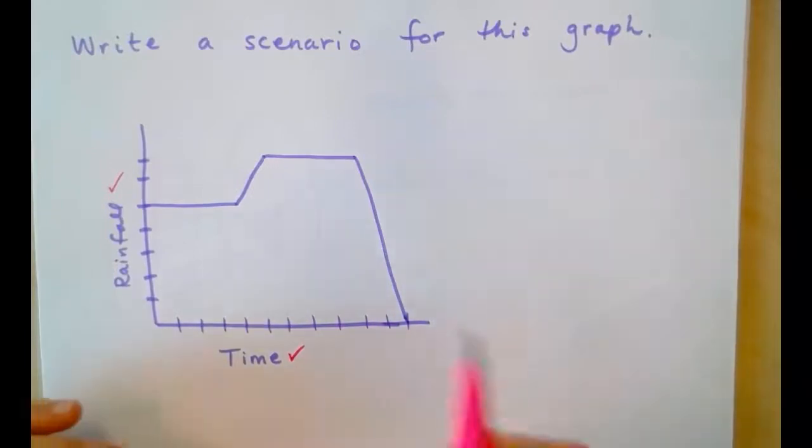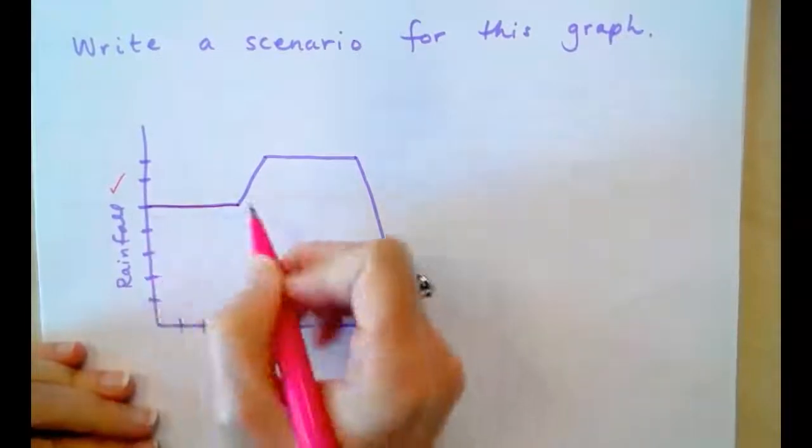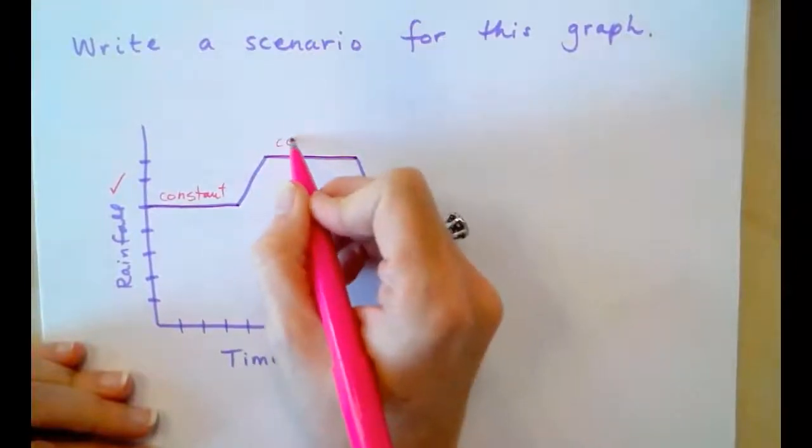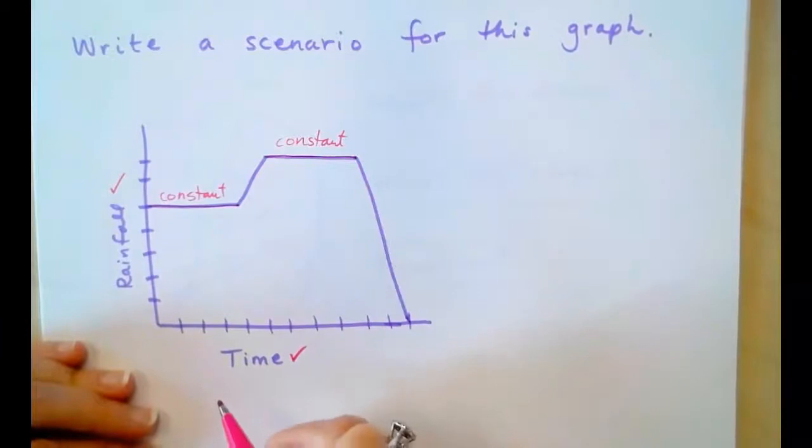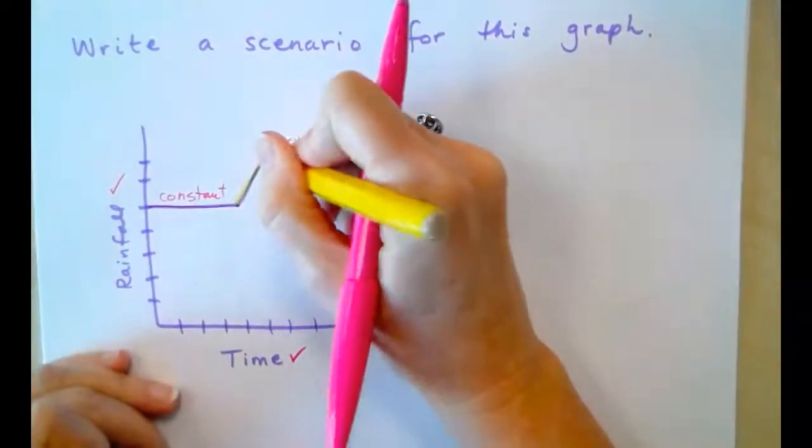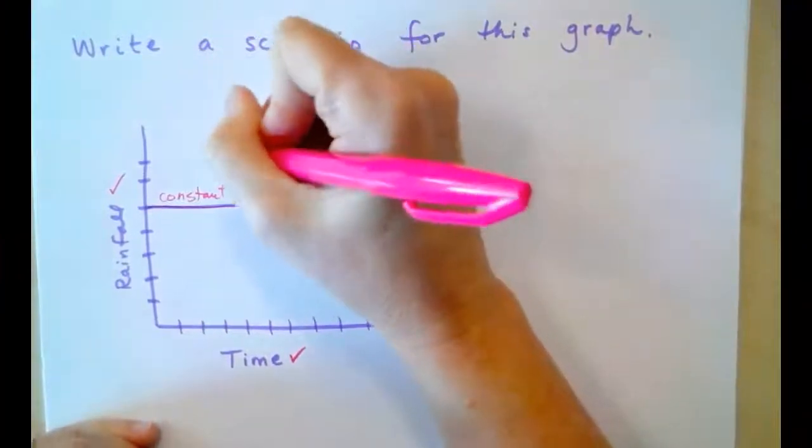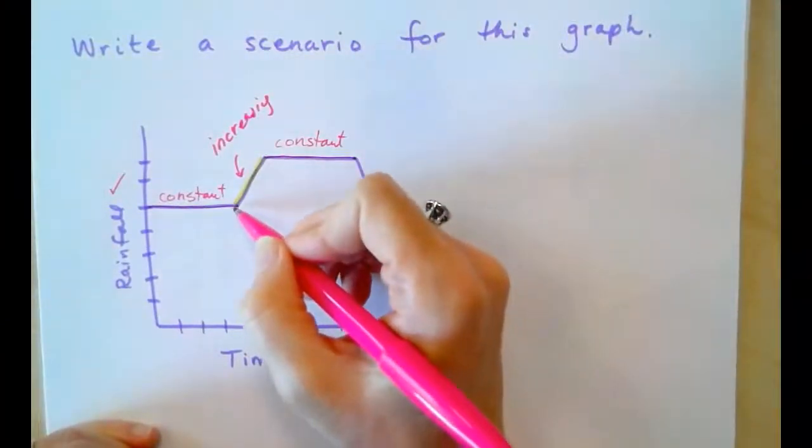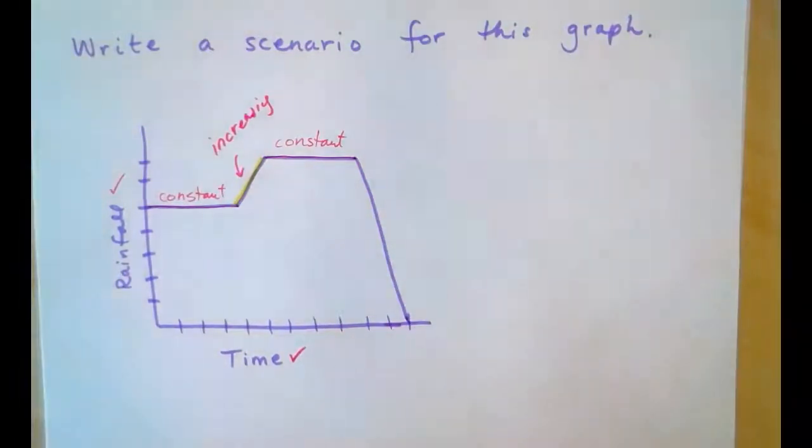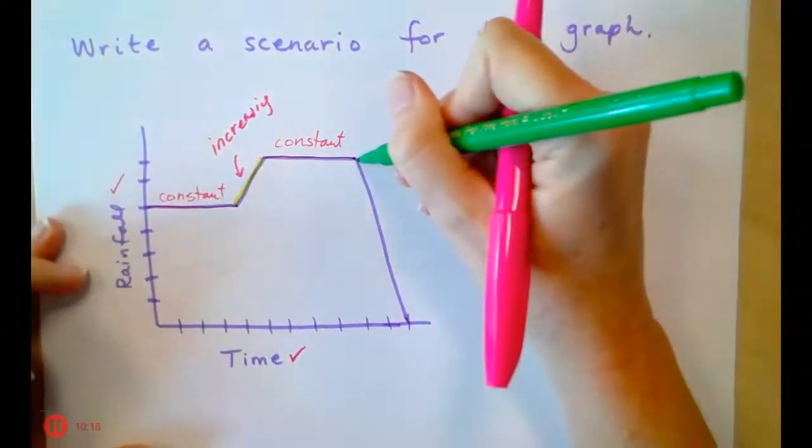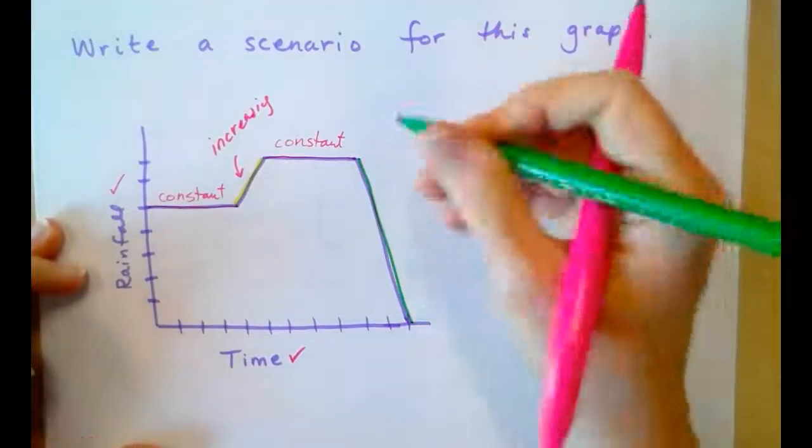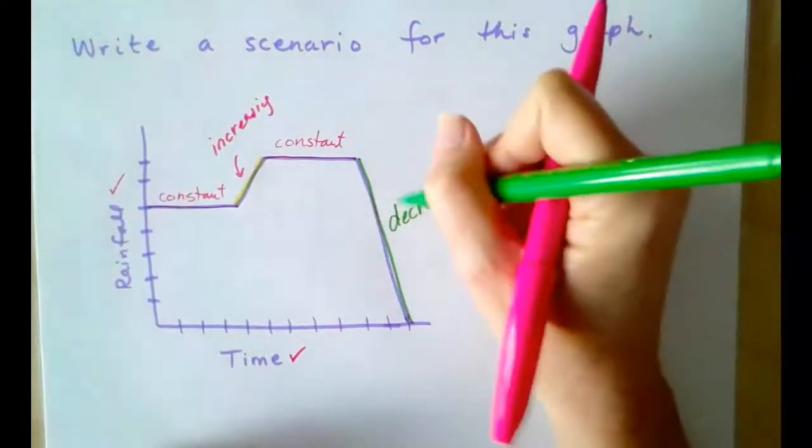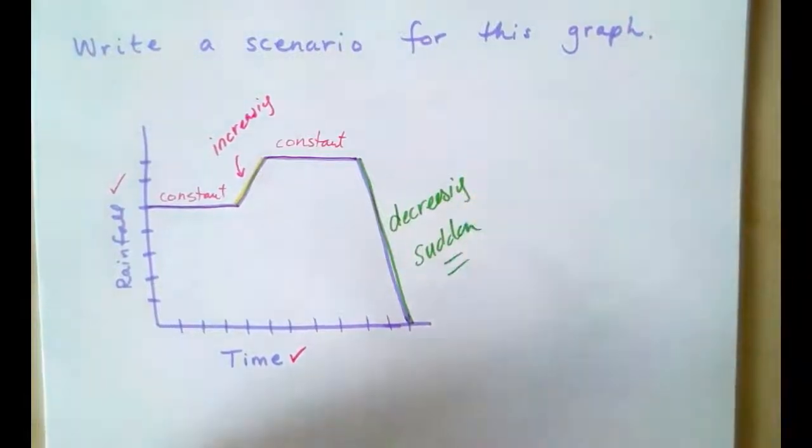So, if we were to write a scenario here, let's consider what's happening on the graph. Whenever we have a horizontal line, that is called a constant function. So, on these two parts of the graph, the rain is falling steadily. Here, we have an increasing function. So, in this part of the function, and this is a continuous function, the rainfall is increasing. And then, finally, on the right-hand side, the rain very suddenly decreases. This is a decreasing part of the function. So, it's a sudden or abrupt decrease.